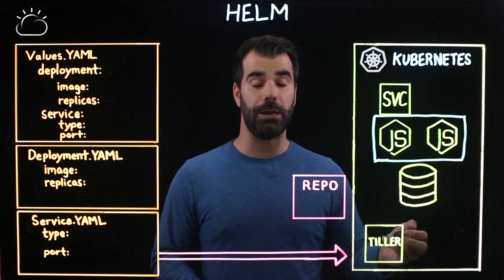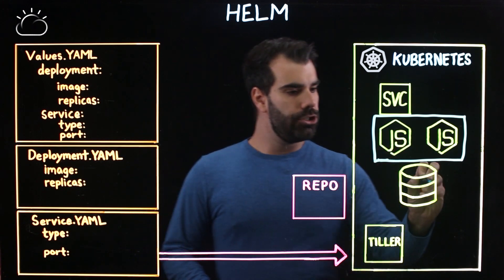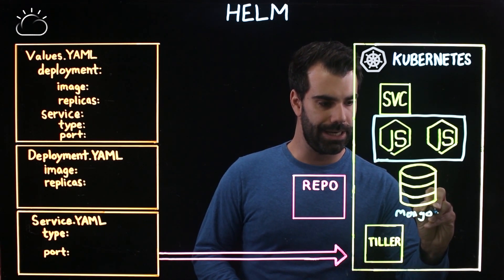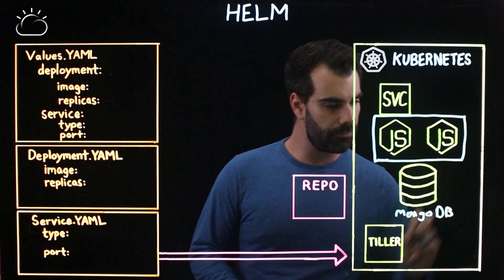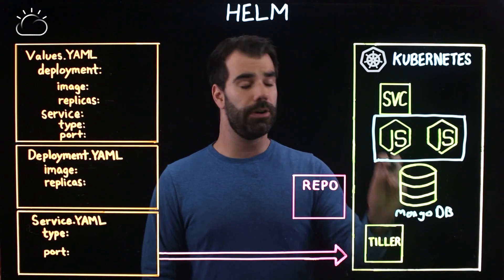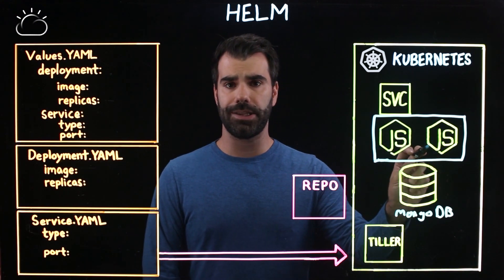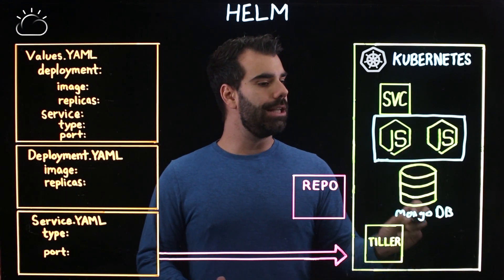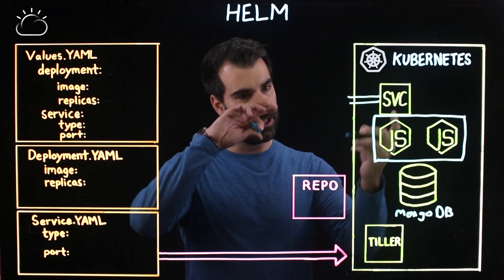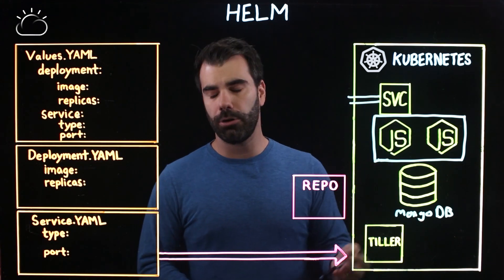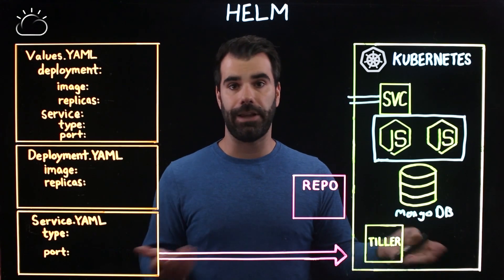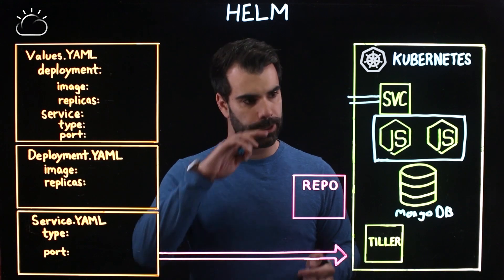We have one deployment but two replicas of this, because it needs to be highly available to handle all the different incoming requests. Additionally underneath this, we've got a MongoDB database to handle communications to and from each of our replicas of the main Node.js application. We've also written a service to access our application as a NodePort, meaning there's a one-to-one ratio between IPs inside and outside of our Kubernetes cluster.